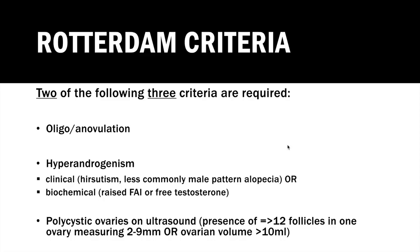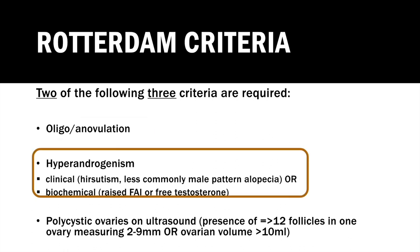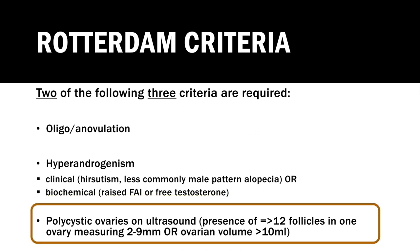As a final bonus question: what would constitute an elevated day 2–7 FSH and what could it indicate? You recall the Rotterdam criteria, where 2 of 3 items are required to diagnose PCOS: first, oligo- or anovulation; second, hyperandrogenism — demonstrated clinically with hirsutism or male-pattern alopecia, or biochemically with raised free androgen index or free testosterone; and third, polycystic ovaries on ultrasound, defined as more than 12 follicles in one ovary each measuring 2–9mm, or a total ovarian volume greater than 10 millilitres.